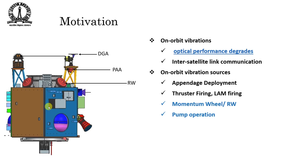Any sensor attached to the spacecraft — for example a camera or any optical device used to take images of the Earth or for inter-satellite link communications — will see degraded performance because it is vibrating. It will not be looking at the same place or sending the signal in the same direction all the time. Most of the time these on-orbit vibrations are present.